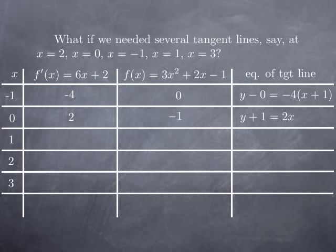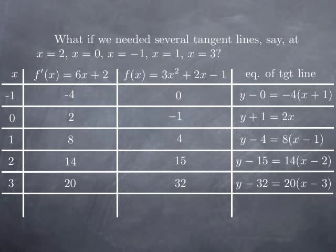At x equal to 0, the equation of the tangent line is y plus 1 equals 2 times x, in other words y equals 2x. At x equal to 1, we obtain 8 for f prime and 4 for f, so the equation of the tangent line is y minus 4 equals 8 times x minus 1. At x equal to 2, we obtain the tangent line established in the previous example. At x equal to 3, we find a slope of 20 and a y-coordinate for the point of tangency of 32, so the tangent line is y minus 32 equals 20 times x minus 3.